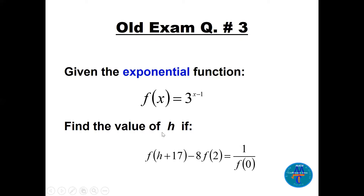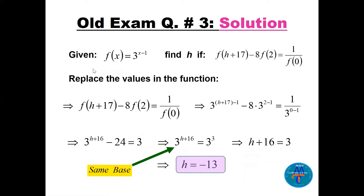Question three: given f(x) = 3^(x-1), find h if f(h+17) - 8f(2) = 1/f(0). Replace each value in the function: f(h+17) = 3^(h+17-1) = 3^(h+16), f(2) = 3^(2-1) = 3^1 = 3, so 8f(2) = 24. For f(0) = 3^(0-1) = 3^(-1) = 1/3, so 1/f(0) = 3.